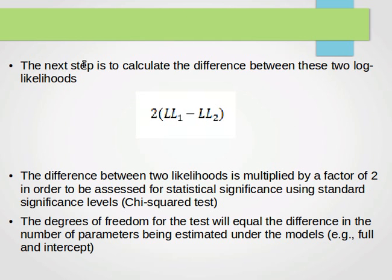Now the next step is to calculate the difference between the two log likelihoods. Log likelihood one minus log likelihood two and we multiply that by two. Why do we multiply by two?